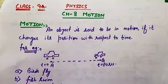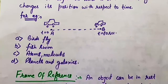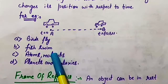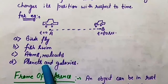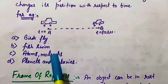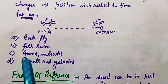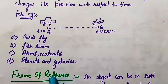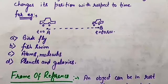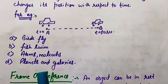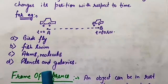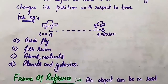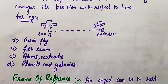In our day to day life we have so many examples of motion. For example, birds fly — from daily life we can see birds fly. Fish swim in water, that is also a type of motion. Atoms and molecules are always in motion, as we know in chemistry. And in the universe, the planets are always in motion.